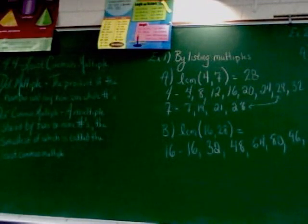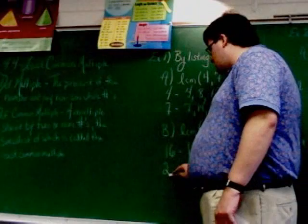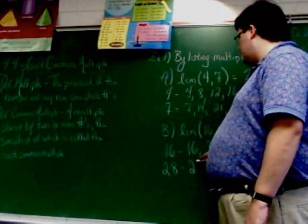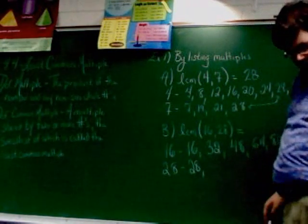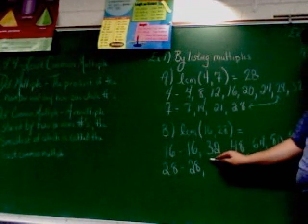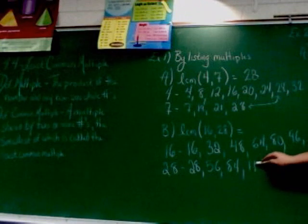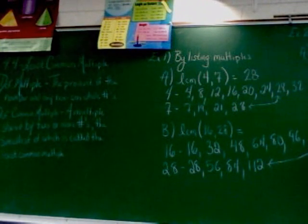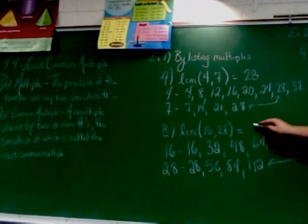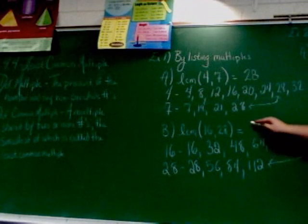28 is probably going to be even worse for some of you. So, 28 starts with 28, then it goes to 56, then it goes to 84, still don't have a match. 112. Now, we have a match and the least common multiple of 16 and 28 is 112.